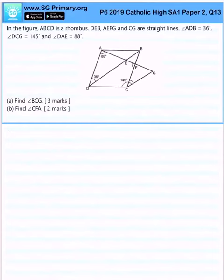In the figure, ABCD is a rhombus. We have three straight lines. Angle ADB is 36 degrees, angle DCG is 145 degrees, and angle DAE is 88 degrees. All is already presented in the diagram.